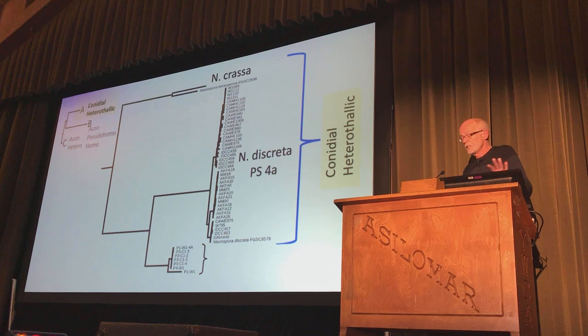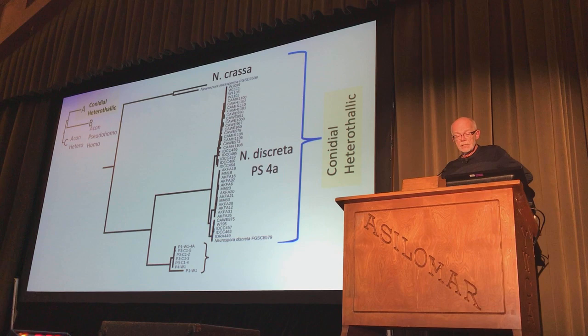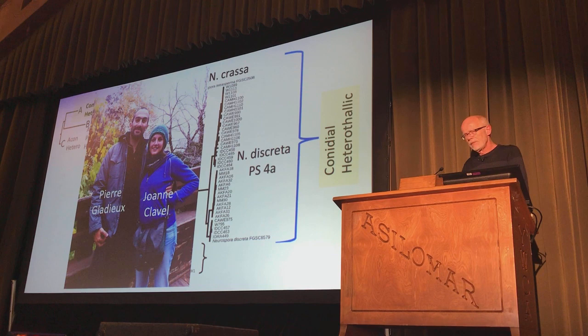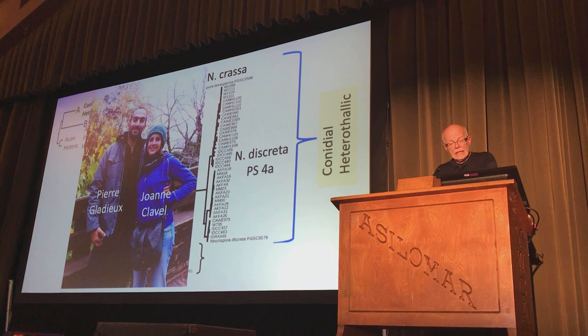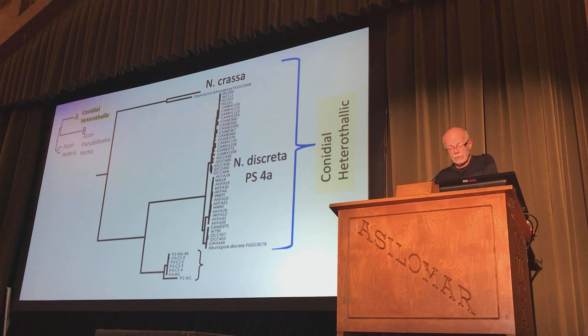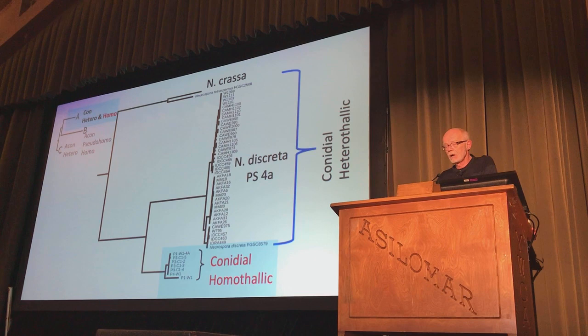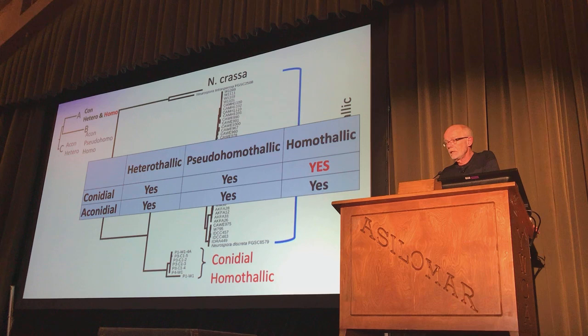The conidial heterothallic clade had been worked on already by Pierre Gladieux. But in this clade, Chris found conidial homothallic Neurospora. So now we can complete that chart — everything that any ascomycete can do, Neurospora can do. The acanidial heterothallics behave like the conidial heterothallics — they separate into populations: a Montana population, Michigan, Colorado, Alaska. Nothing too surprising there.